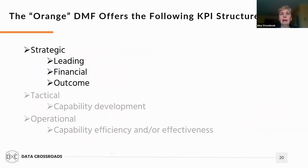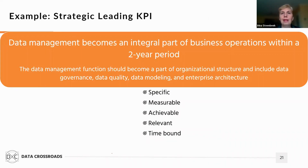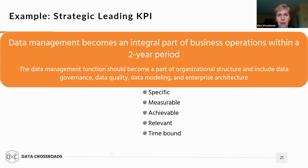The Orange data measurement framework recognizes three types of key performance indicators at the strategic level: leading, financial, and outcome. I discuss these three and other types of KPIs in one of my courses published at the Data Crossroads Online Academy. In this webinar, I'll demonstrate an example of a leading strategic KPI. A leading KPI is a measure that identifies long-term trends and predicts successful future outcomes of a data management initiative. If a company has decided to set up a formal data management function, it can define the following KPI.